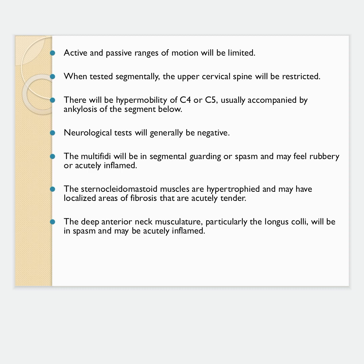There will also be segmental guarding and muscle spasm in the region of any tear, trauma, or injury. Spasm may persist due to acute inflammation in the region, which causes ongoing pain. Locally we may find hypertrophy, fibrosis, and tenderness on palpation. Prolonged spasm can sustain inflammation, creating a cycle of spasm and acute inflammation in the affected area.